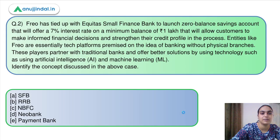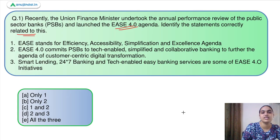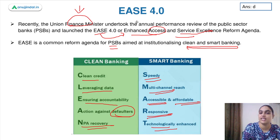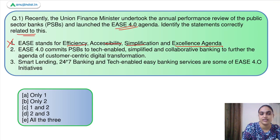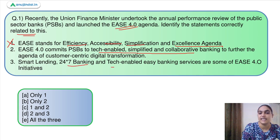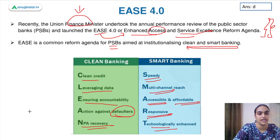So this was about EASE 4.0. Coming back to our question: which statements are correct? The first one is incorrect because it says EASE stands for Efficiency, Accessibility, Simplification, Excellence Agenda — but it actually stands for Enhanced Access and Service Excellence Reform Agenda. The second statement is correct: EASE 4.0 commits to tech-enabled, simplified, and collaborative banking. The third is also correct, listing smart lending, 24-7 banking, and tech-enabled easy banking as its initiatives. So the answer is option D — second and third are correct.